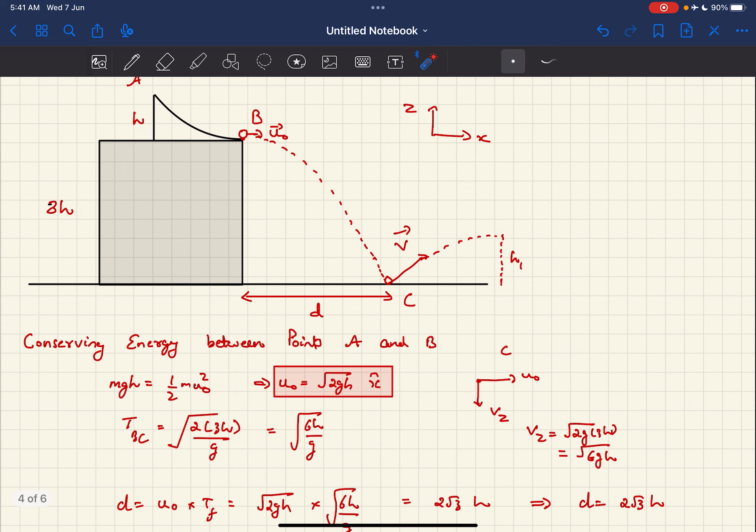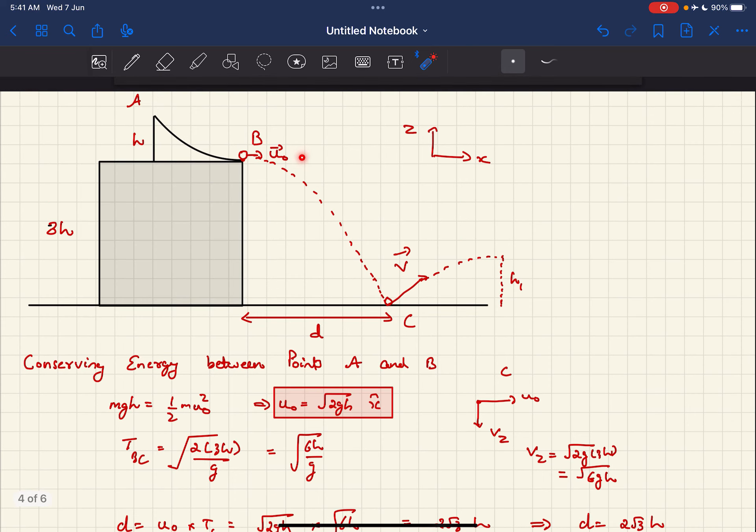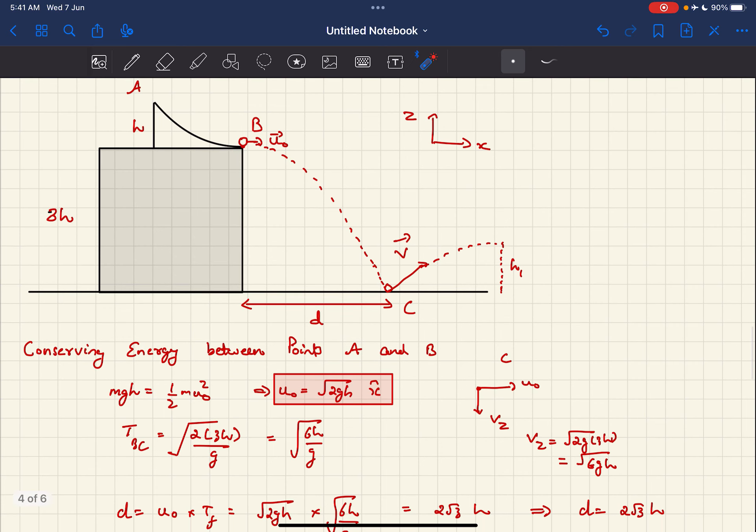We can easily find out the horizontal velocity U0 by conserving energy between points A and B. Since it is a frictionless curved surface, energy is conserved. The decrease in potential energy equals the gain in kinetic energy. By using that principle, we get U0 as √(2GH), and the direction is in the horizontal direction, which is x̂ in this case.